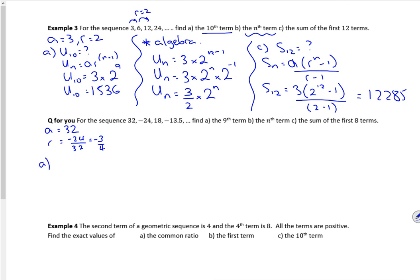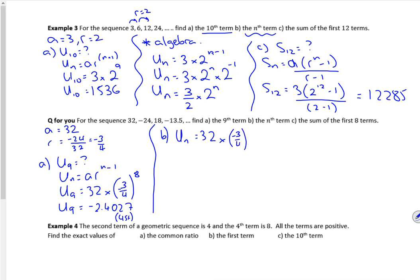So the first question was the ninth term. So Un is ar to the n minus one. U9 is 32 times by minus three quarters to the power n minus one, so to the power eight. So U9 is, according to the calculator,